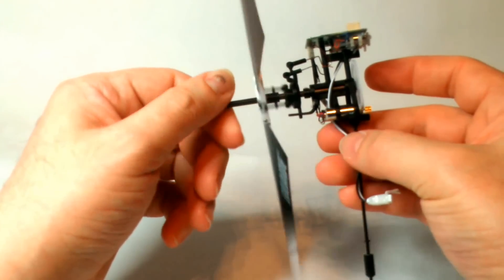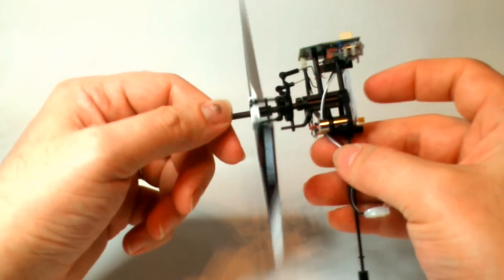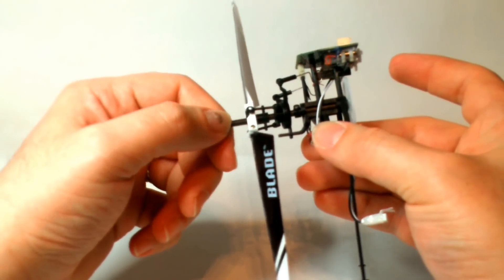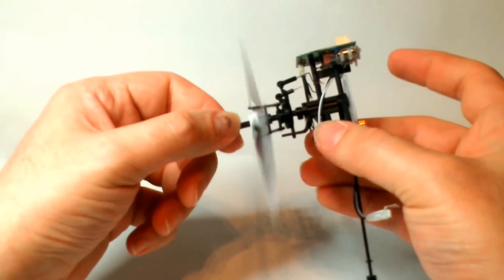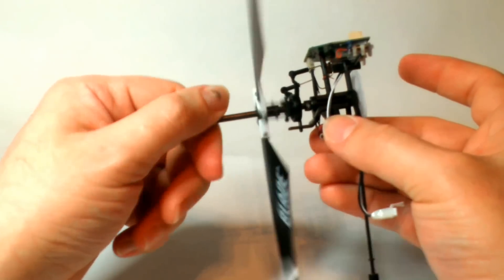You want it loose enough to spin freely. You don't want to bind up your bearings, but you want it tight enough that there's not a lot of play. There's just the tiniest amount of up and down play, which is exactly what you want. It's almost imperceptible, but it's enough that this thing spins nice and free. And the motor is obviously freewheeling.